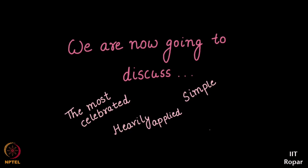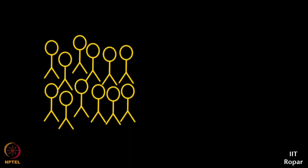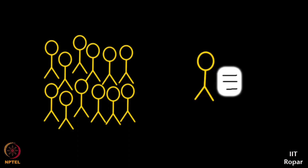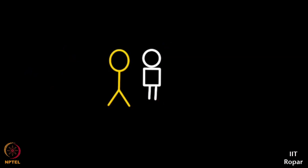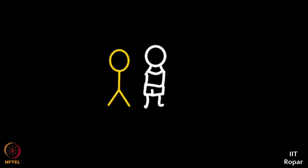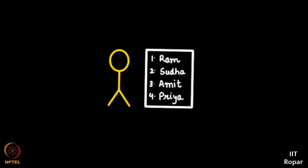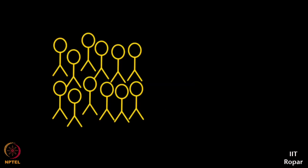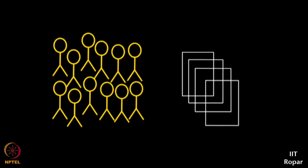Before that, let us start our lesson with a small activity. The activity comprises a bunch of students trying to talk to each other, and then they make a note of who they were impressed with. For example, a person will go and talk to 20 others and make a note of a list of people that she was impressed with. Every single person does the same — all 20 people write down the names of people they are impressed with and give it to us.